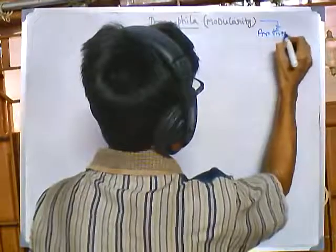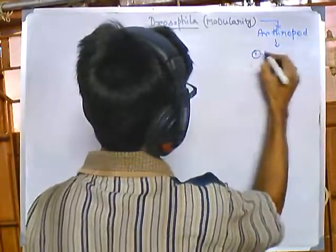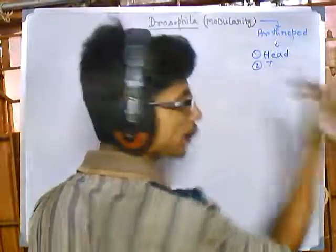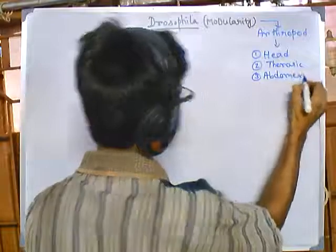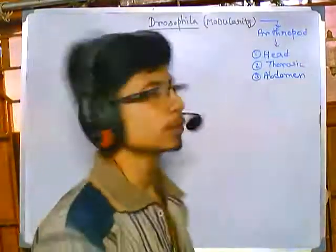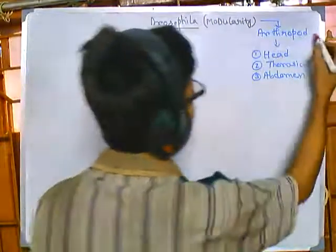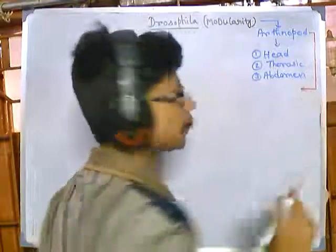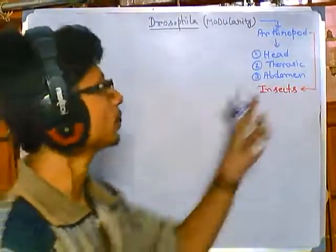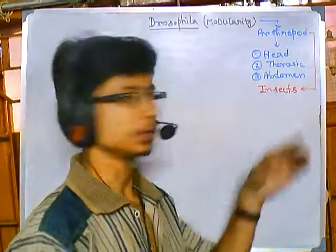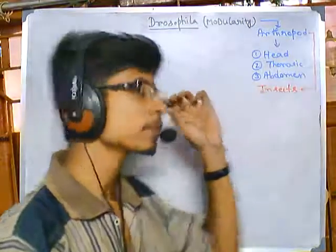The arthropod body can be divided into three different segments: head segment, thoracic segment, and abdominal segment. Among arthropods, insects are a very important and common member — very popular because they are present in huge amounts and contribute to the world population of animals enormously.